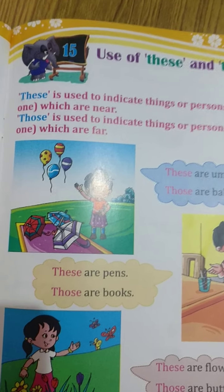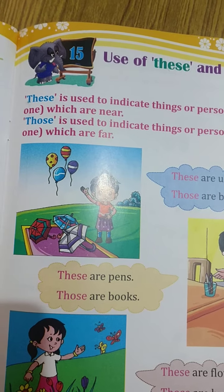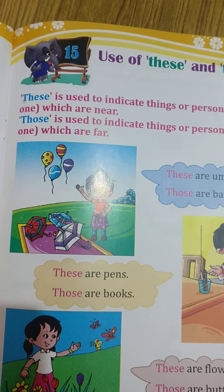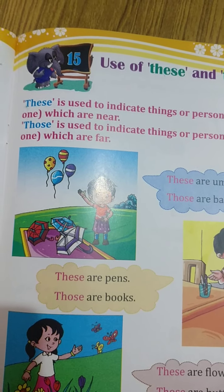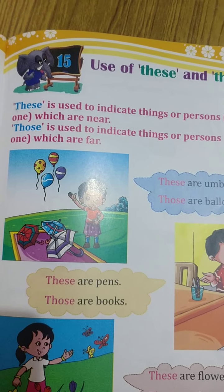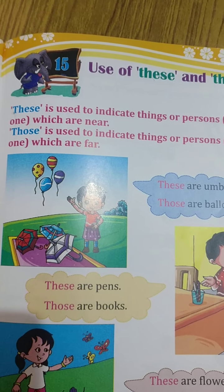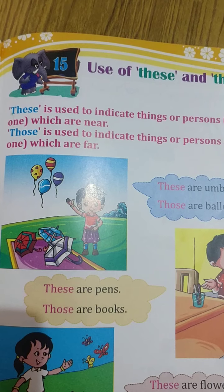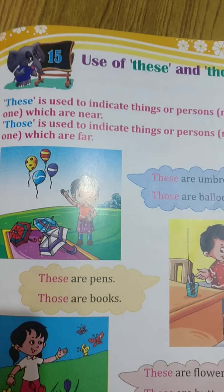'These' is used to indicate things or persons more than one which are near. If they are near and more than one, we use 'these.' And 'those' is used to indicate things or persons more than one which are far.